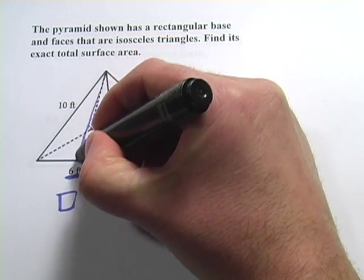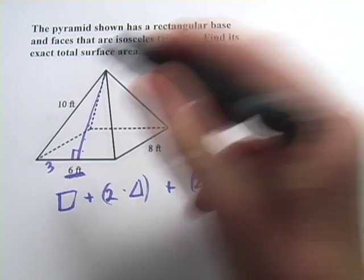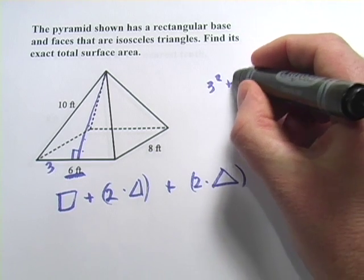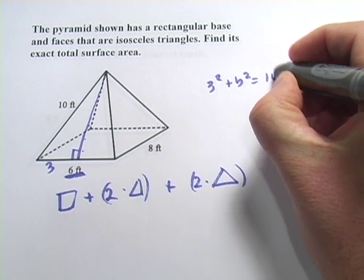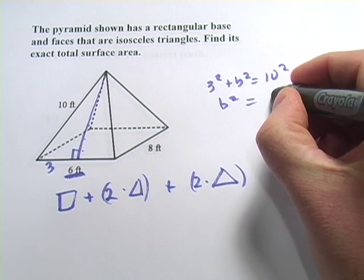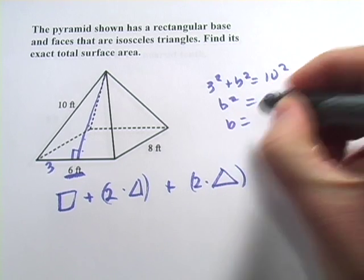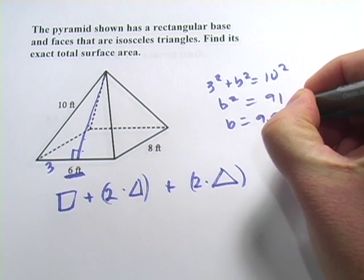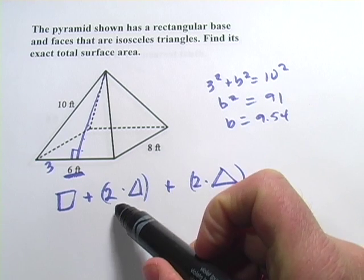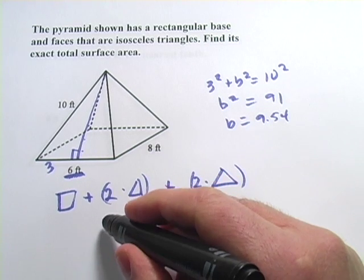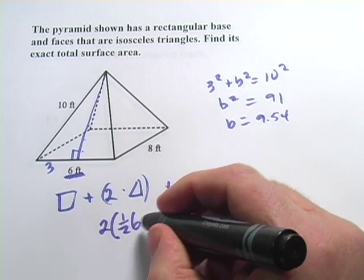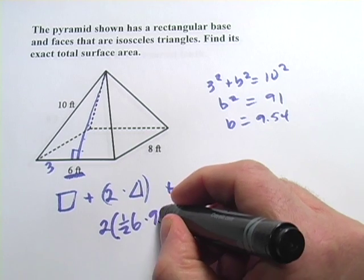When I drop a perpendicular here, what I get is sides of three and 10. So if I were to use the Pythagorean theorem, I'd say 3 squared plus b squared equals 10 squared. And b squared would equal, let's see, 100 minus 9 would be 91. So b would equal the square root of 91 or about 9.54. So that's for one triangle. Let's go ahead and put in the formula for the area. So we've got two times one half the base, which is six, times the height, which we just figured out now is 9.54.